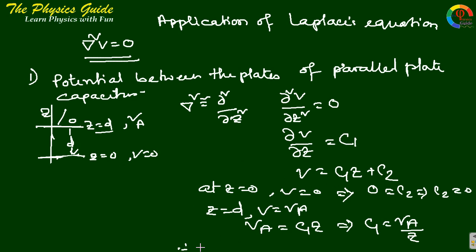Therefore V equals to V_a by d into z. So this gives us V equals to V_a by d times z plus 0. So our final solution is that the potential in between the two plates equals to V_a by d into z.